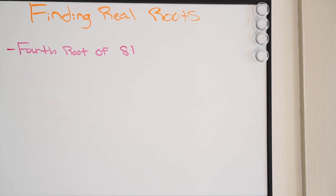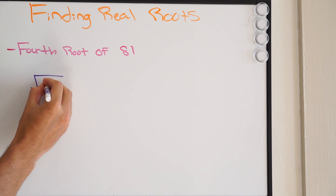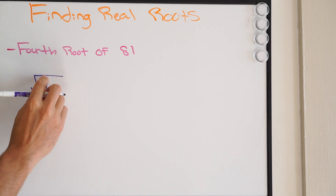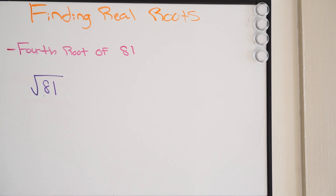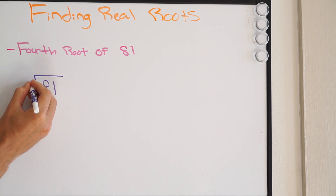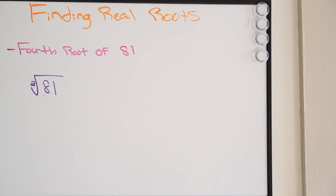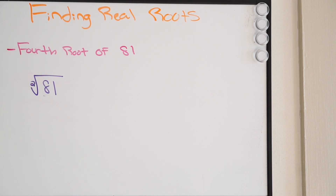For example, if I had the square root of 81 — we realize that there is essentially a 2 here, meaning square root. Now we don't write that; when we see just the square root, we already assume there is a 2 there, but there is in fact a 2.